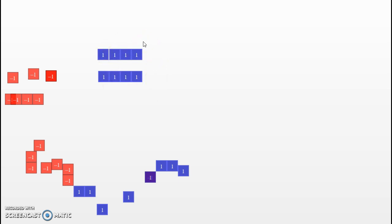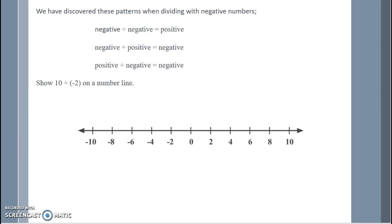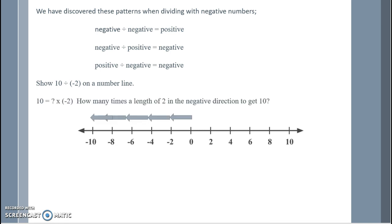Turning it into a multiplication problem helps us simplify this particular problem. All in all, we have discovered these patterns when dividing with negative numbers: a negative divided by a negative is a positive, a negative divided by a positive is a negative, and a positive divided by a negative is a negative. Show 10 divided by negative 2 on a number line. We turn it into multiplication: 10 is how many times a length of 2 in the negative direction to get positive 10? We know that if we go negative 5 lengths of 2, we would get to negative 10. However, we need to think of that as the opposite, so going the opposite brings us to positive 10, and we need 5 groups of 2. That would be negative 5, helping us do the opposite of what we were thinking.